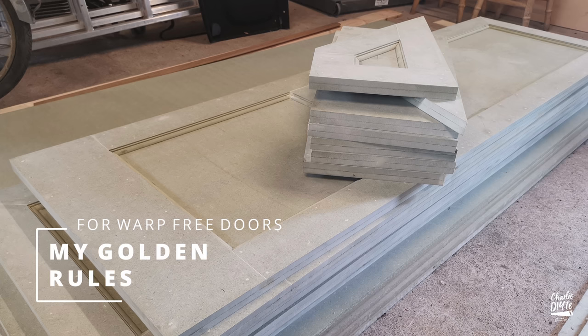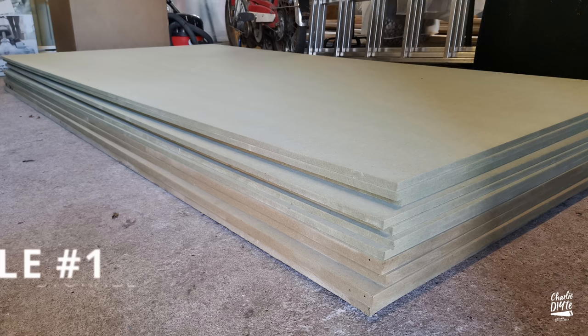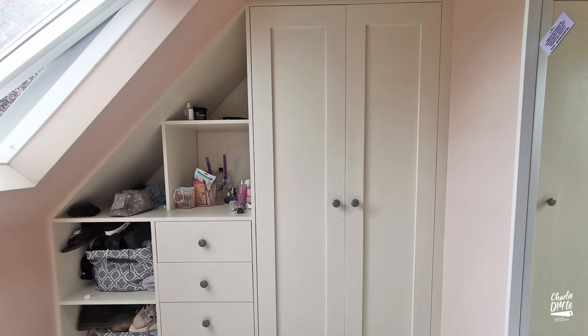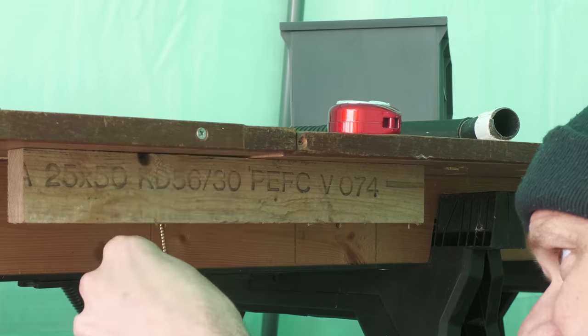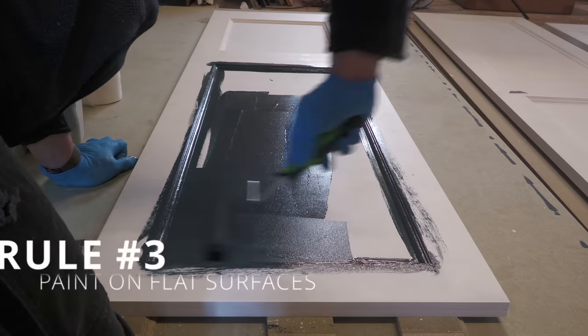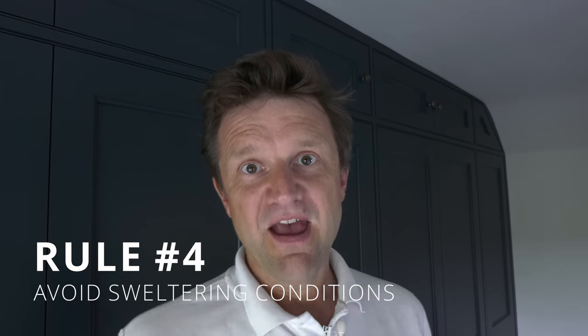When making wardrobe doors or anything for that matter with MDF, I have four golden rules that I like to stick to. It's imperative to store your sheets of MDF flat. But if like me you haven't got the space to store things flat, make sure in storing them vertically you have plenty of wood behind them supporting them to prevent them warping. Your work table also needs to be completely flat. I had two doors that sagged whilst being constructed across two sawhorses, and I built that warp into the doors and they had to be remade.